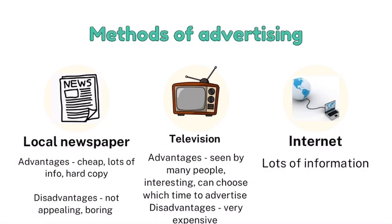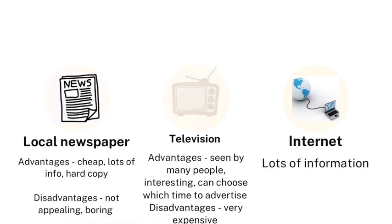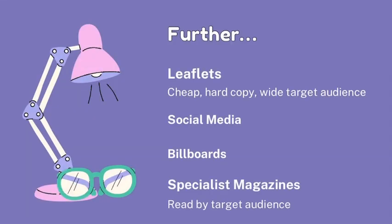Third is the internet. Through the internet, a lot of information can be passed, like for e-commerce — this is when they will be trading through the internet and a lot of information can be provided compared to hard copies. Other points include leaflets, which are cheap, also a hard copy resource, and they can help build a large customer base.